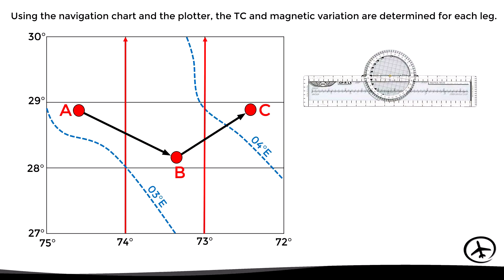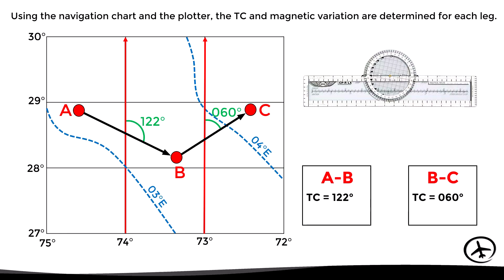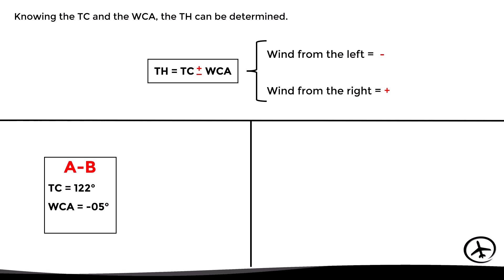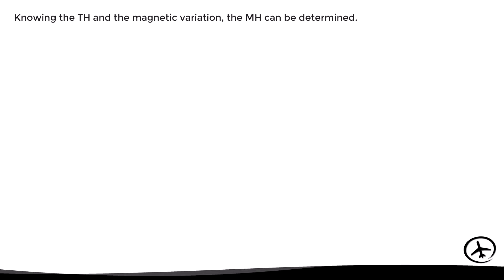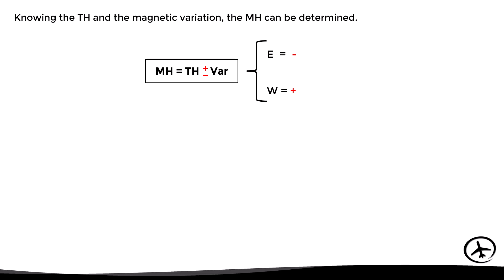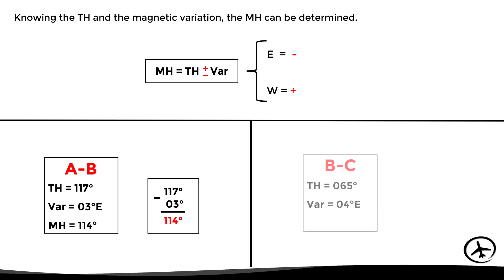First, let's determine the true courses and magnetic variation using the navigation chart and plotter. Using the meridians as reference, we measure the angle between the meridians and the courses: 122° for AB and 060° for BC. We then look for the nearest isogonic line for each leg: magnetic variation is 3° east for AB and 4° east for BC. Knowing the true courses and wind correction angles, the true headings are 117° for AB and 065° for BC. Applying magnetic variation, the magnetic headings are 114° for AB and 061° for BC.